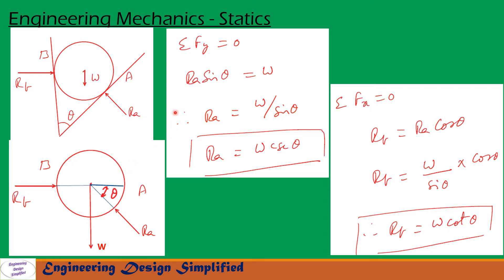Let us resolve forces along y and x directions. First, resolving forces along y direction: sigma Fy equal to 0. The vertical component of Ra is Ra sin theta. So Ra sin theta equals w, which gives Ra equal to w divided by sin theta. Therefore Ra equals w cosecant theta.